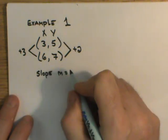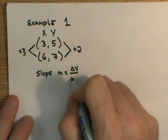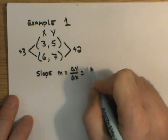Slope is equal to delta y over delta x. In this case, it would be 2 thirds.